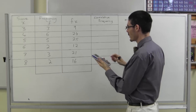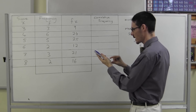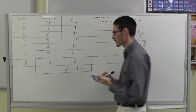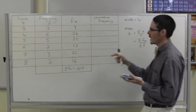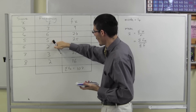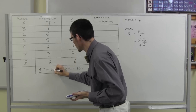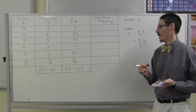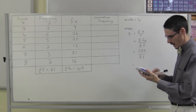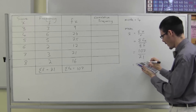I'll grab my calculator. The sum of fx is 9+24+25+12+21+16 = 107. And how many scores are there? The sum of the frequencies: 3+6=9, plus 5 is 14, plus 2 is 16, plus 3 is 19, plus 2 is 21. So my mean is 107 divided by 21, which is 5.095...